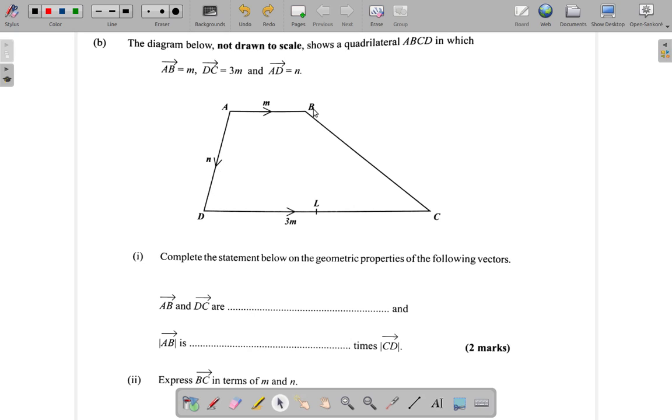Quadrilateral, that means four sides, in which AB is M. So let me see, AB is M, DC is 3M, that's three times longer. AD, this, is N.